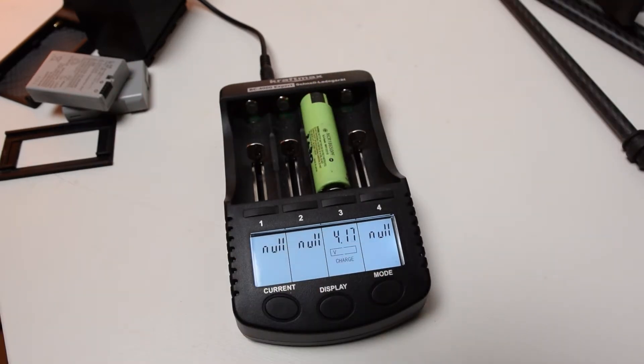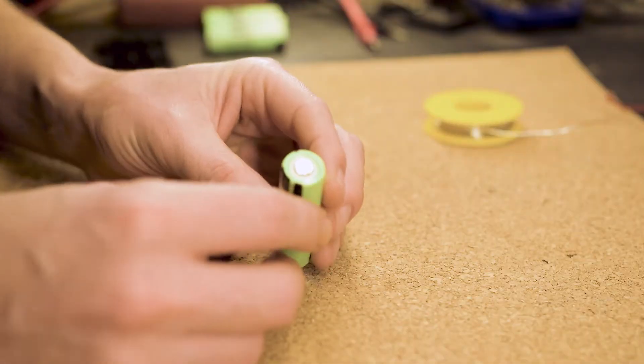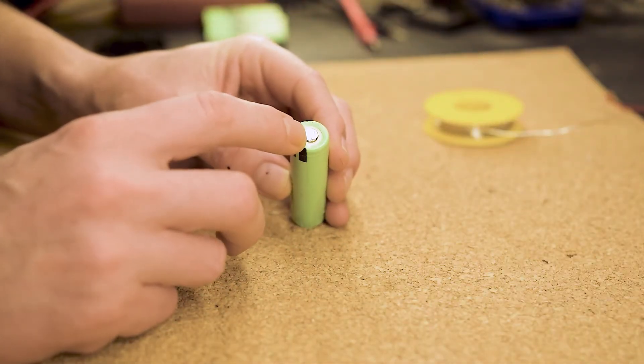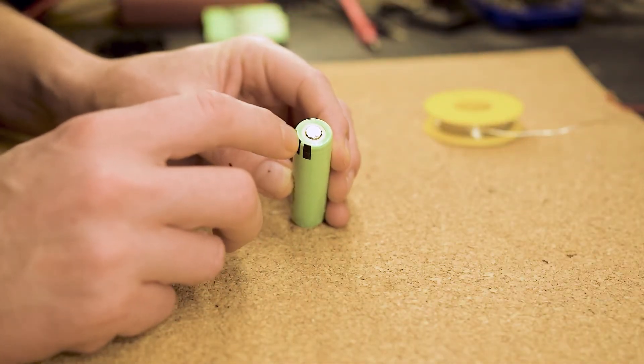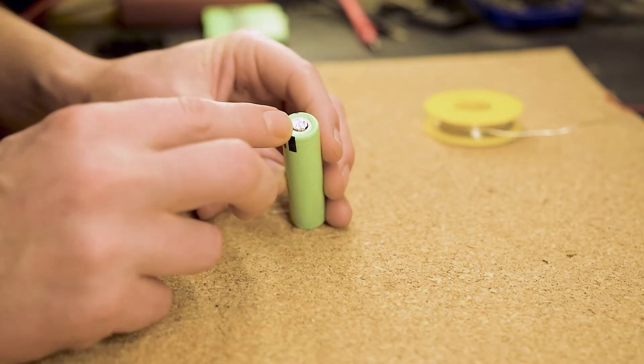When using new cells, there is no need to do that. Very important before we start working with the cells: the contact on the top is the plus terminal and all the rest of the cell behind the heat shrink tubing has negative voltage.